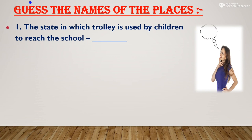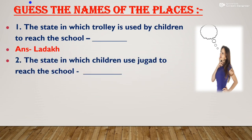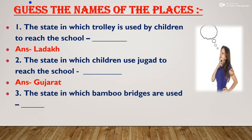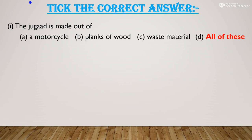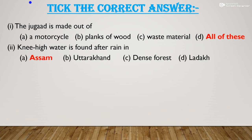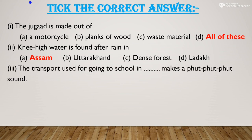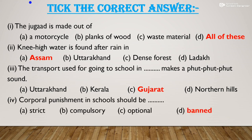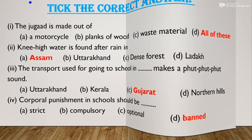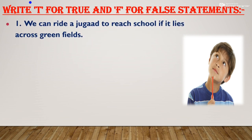Guess the names of places: the state in which a trolley is used by children to reach school — Ladakh. The state in which children need a jugad to reach school — Gujarat. The state in which bamboo bridges are used — Assam. The jugad is made out of a motorcycle, planks of wood, and waste metal — all of these. Knee-high water is found after rain in Assam. Corporal punishment in school should be banned completely.